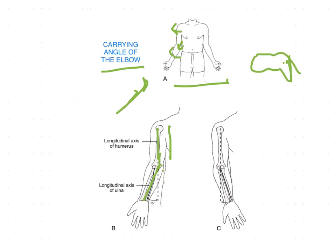This normal valgus angulation is called the carrying angle, or cubitus valgus. Cubitus means elbow, and at the medial aspect of the elbow it has this valgus angulation. So the normal valgus angulation is called the carrying angle or cubitus valgus.